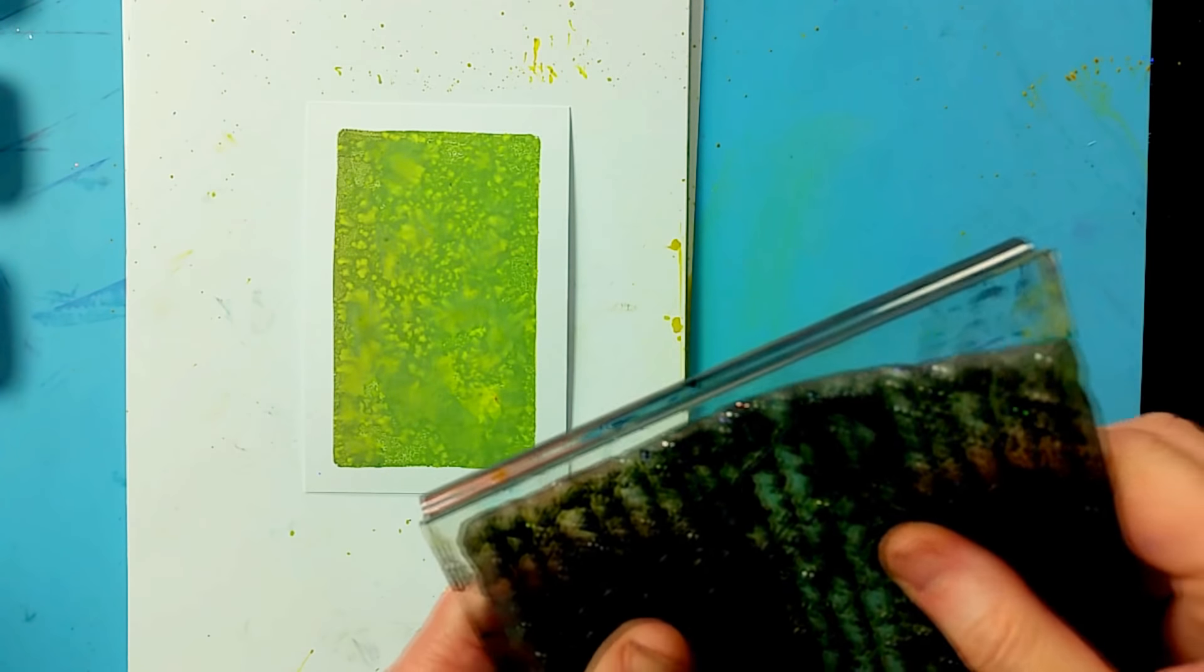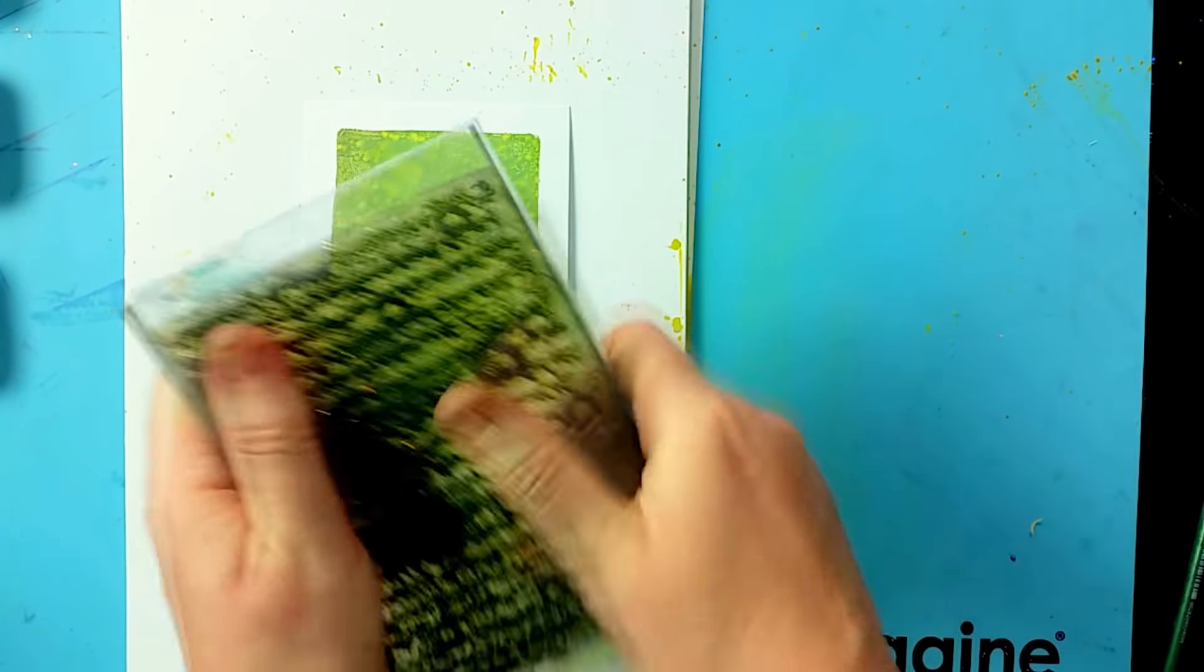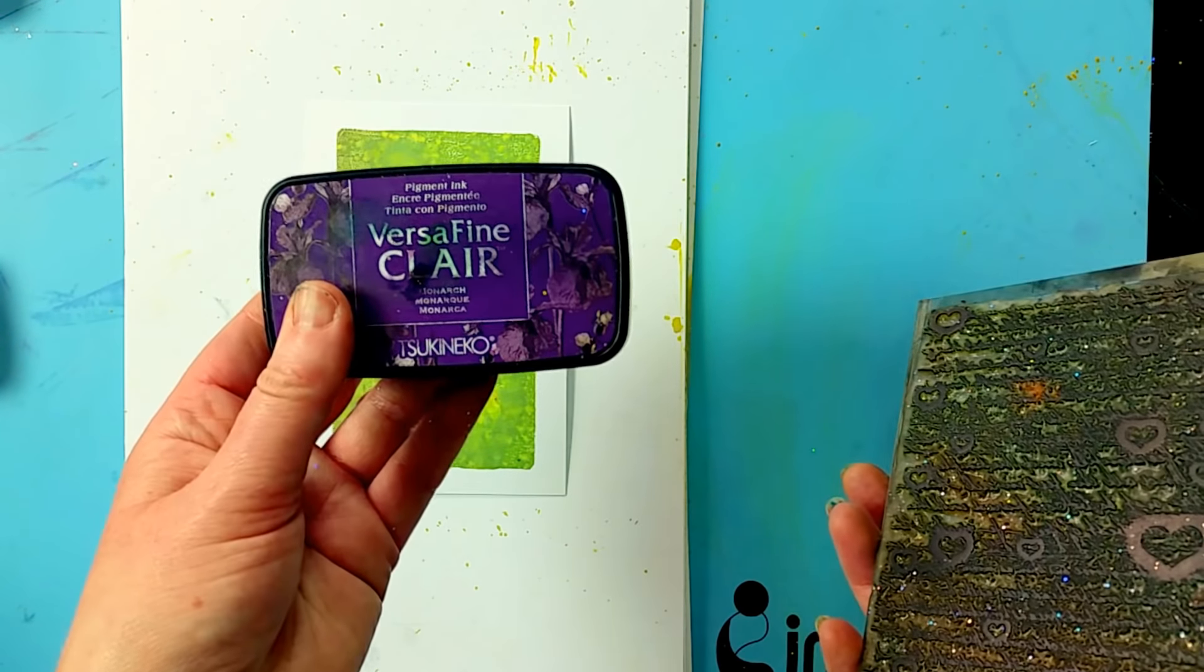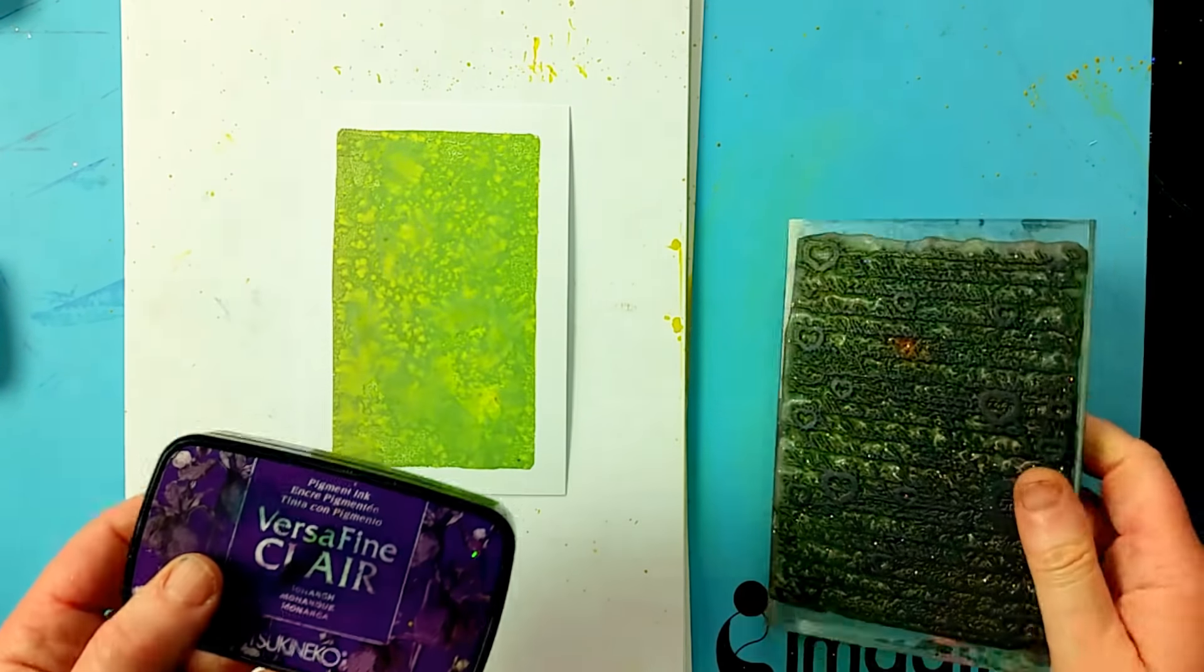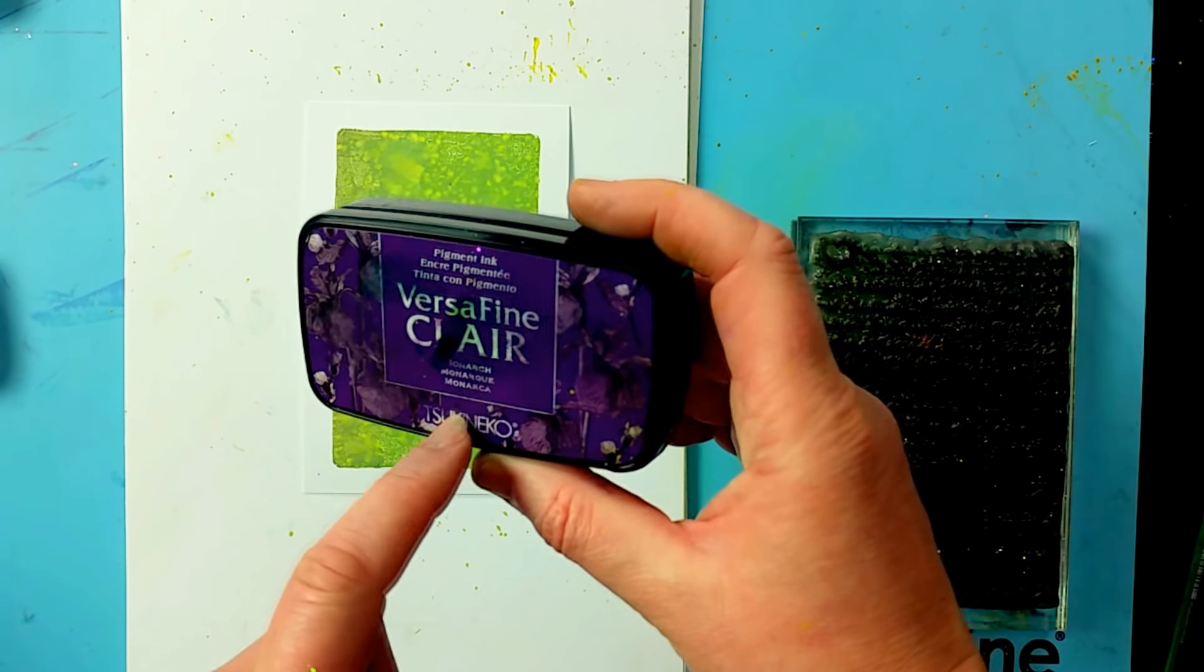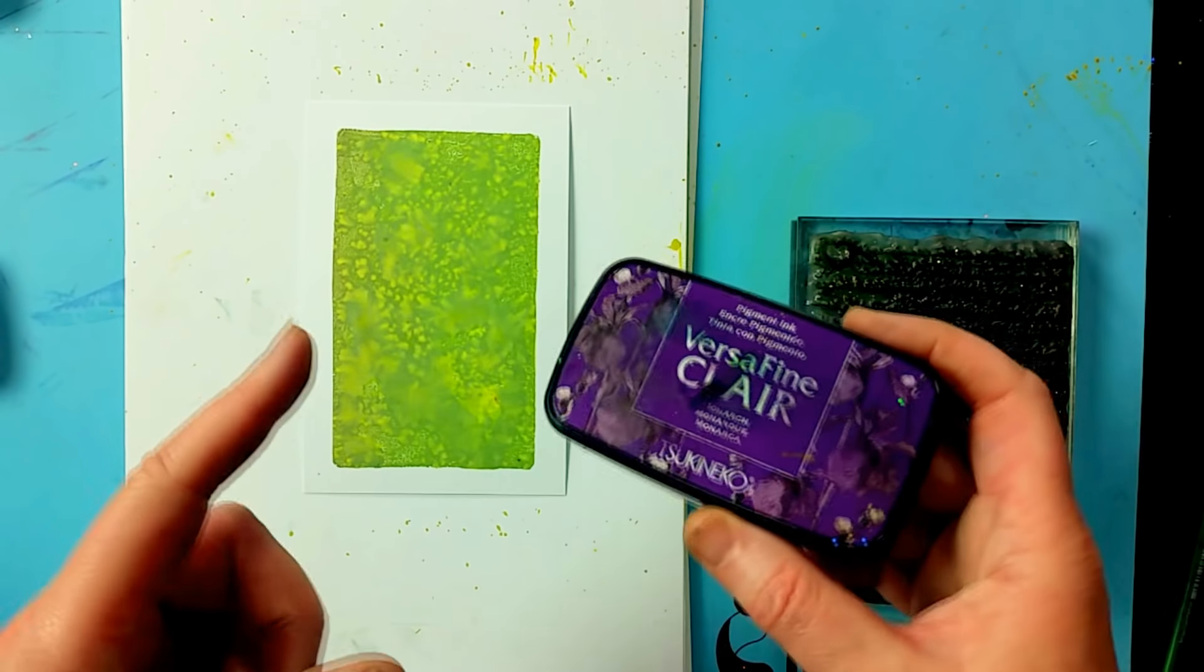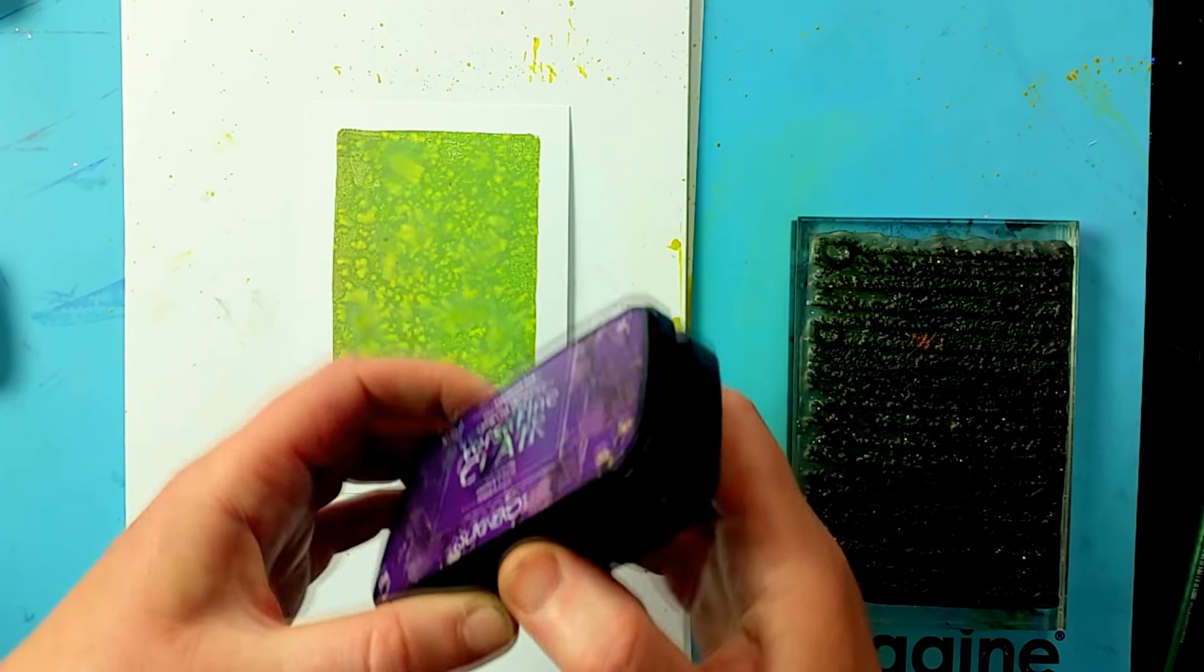Taking our script stamp, this time we're going to be stamping in the Versafine Claire - this is Monarch. These are the new inks that have taken over from Versafine. They're fabulous, they come in a massive array of colors, and they're really nice to work with, especially for detailed stamps.